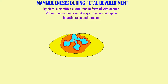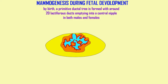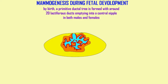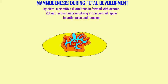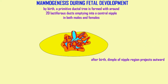By birth, a primitive ductal tree is formed with about 20 lactiferous ducts emptying into a central nipple, and this condition exists in both males and females. The nipple region is at first depressed to form a dimple, but after birth it projects outwards.